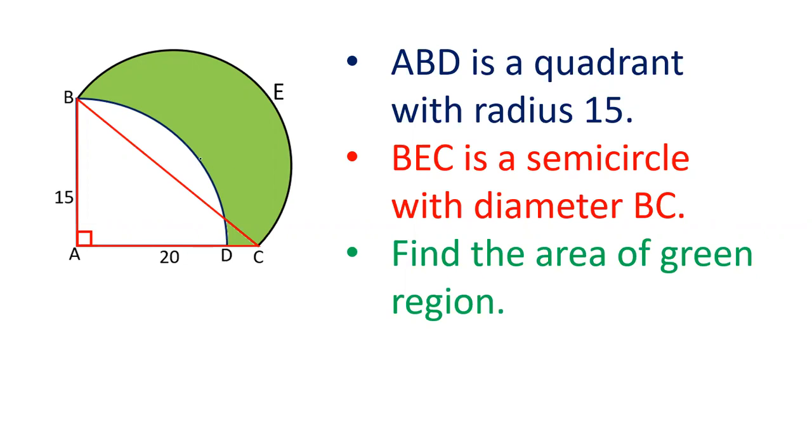In today's video, we are going to learn how to find the area of this green region that is created by a triangle, a quadrant and a semicircle in this figure. There is a quadrant of a circle ABD, there is a triangle ABC and BCE is a semicircle. We have to find out the value of area of green region.